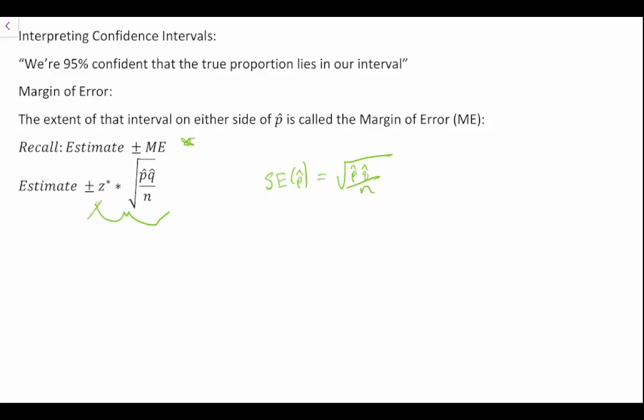Z star, on the other hand, is our critical value of Z, and this will be a constant. This critical value of Z is determined by the percent of confidence that we're putting in our confidence interval. Hopefully after a few minutes and working through a few examples, this will make a little bit more sense to you.